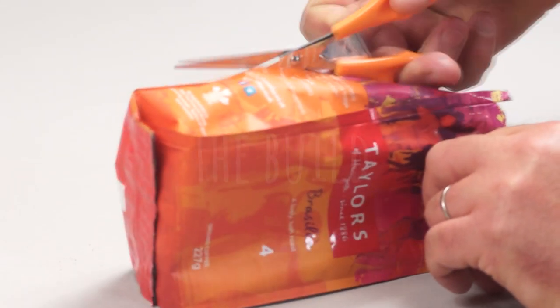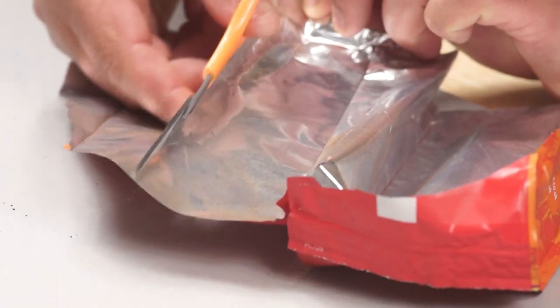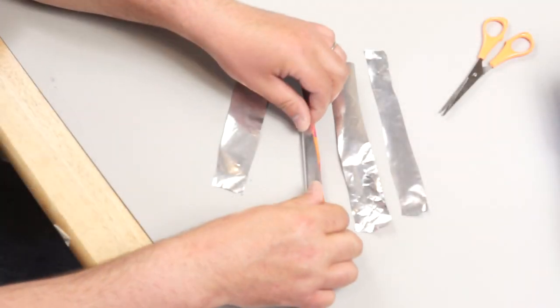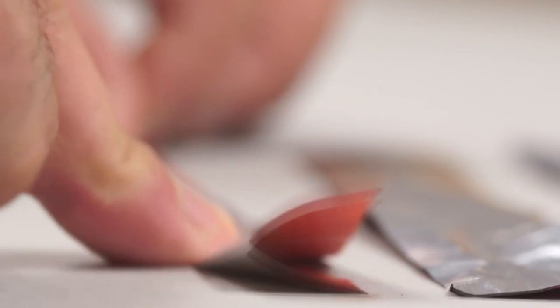To start with I'm going to cut open the coffee packet and then slice off some 1 inch strips. These can be folded over and a little bit of pressure added to score the plastic.